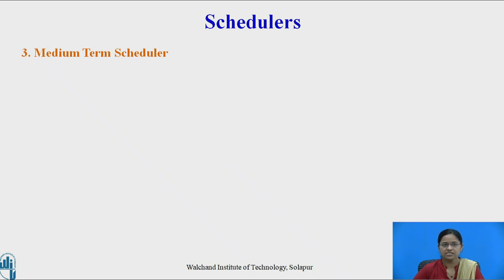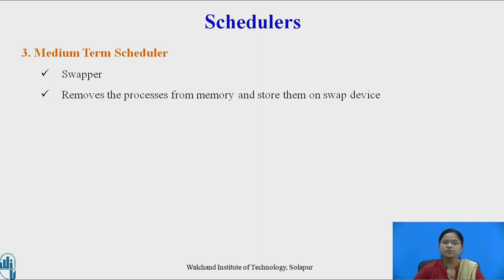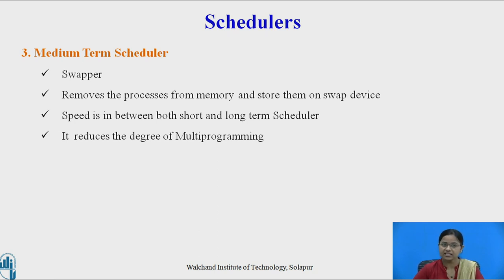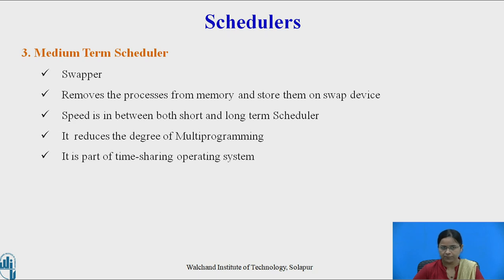The next type is the medium-term scheduler, also called the swapper. It removes processes from memory and stores them on a swap device. Its speed is between that of the short-term and long-term schedulers. The medium-term scheduler reduces the degree of multiprogramming by selecting processes executing in the CPU and storing them back on the swap device, automatically reducing the degree of multiprogramming. It is part of time-sharing operating systems.